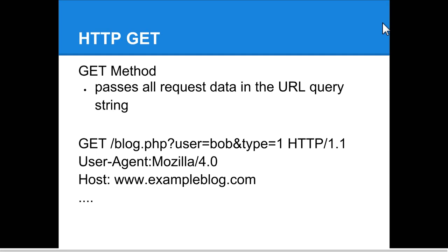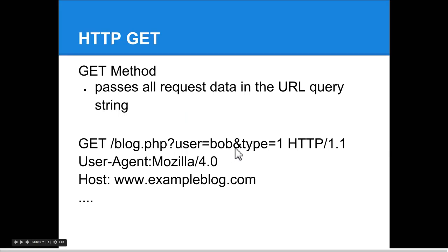There are two methods for making requests. The first is HTTP GET — all the request data is stored in the URL. Basically you have the specific resource on the host you're trying to access, so in this instance it would be www.exampleblog.com/blog.php followed by a question mark and then the request data, which may be used to interact with the database on the back end.